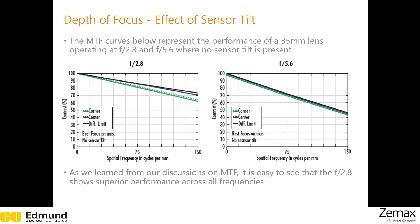Let's see how sensor tilt affects the performance of an imaging system. The first curve here uses an F2.8 lens while the second one uses an F5.6 lens. Now that you know how to interpret MTF curves, it is easy to see that the first lens performs much better across all spatial frequencies. Note that both curves are obtained where no sensor tilt is present.